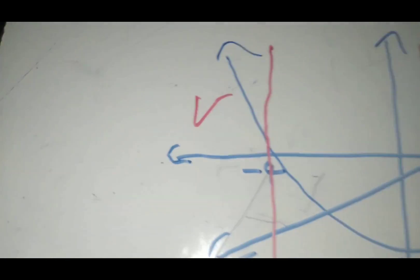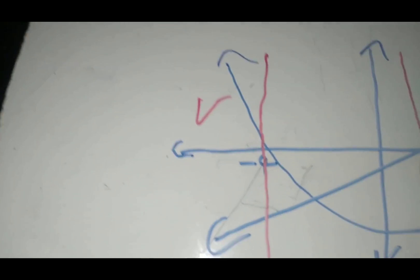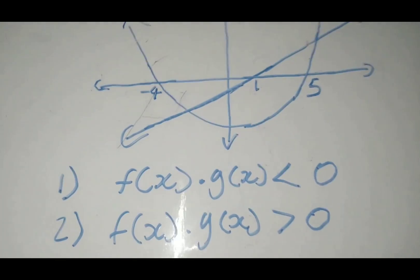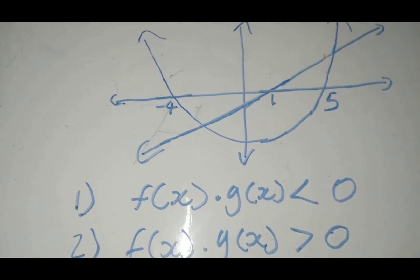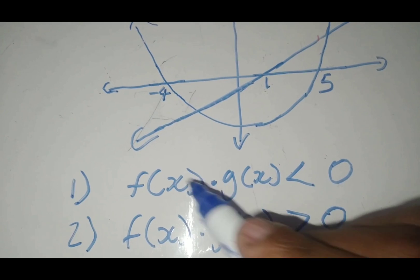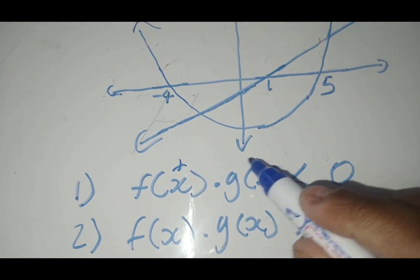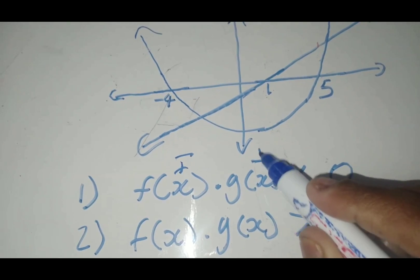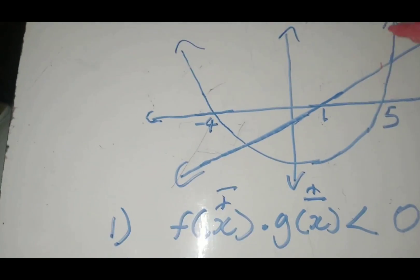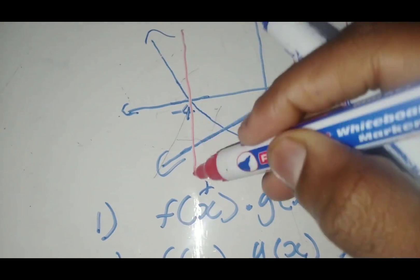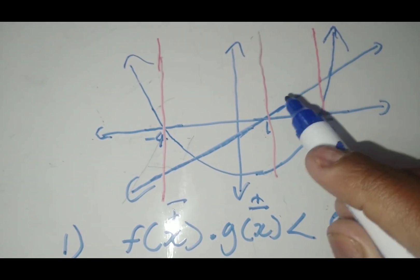With the next example, you can pause the video and attempt it yourself to check if you understand. For this new example, when we see f(x) times g(x) greater than zero, the product must be positive, so the signs must be the same: either positive and positive, or negative and negative. We draw vertical lines at the x-intercepts again, giving us groups 1, 2, 3, and 4.